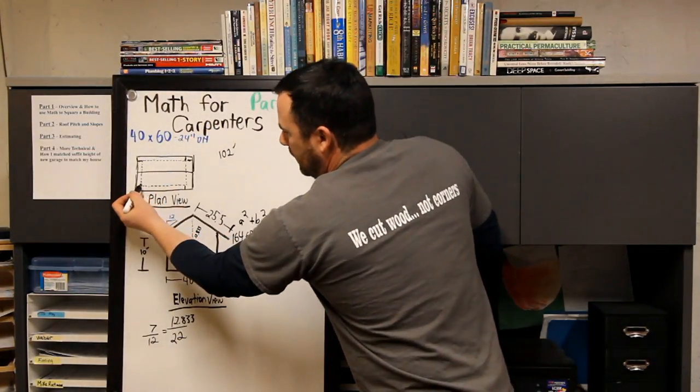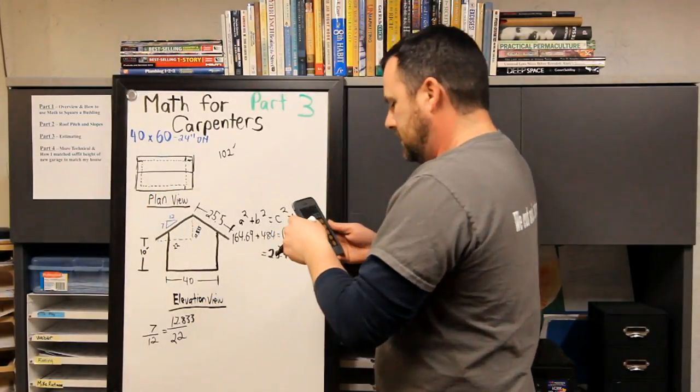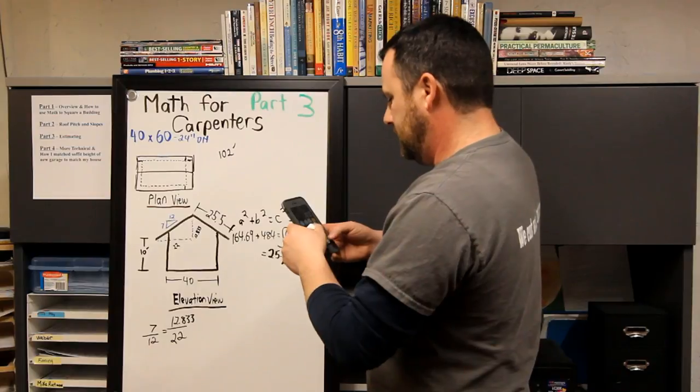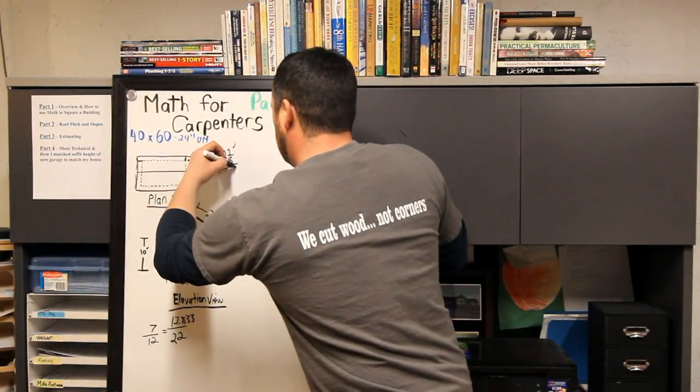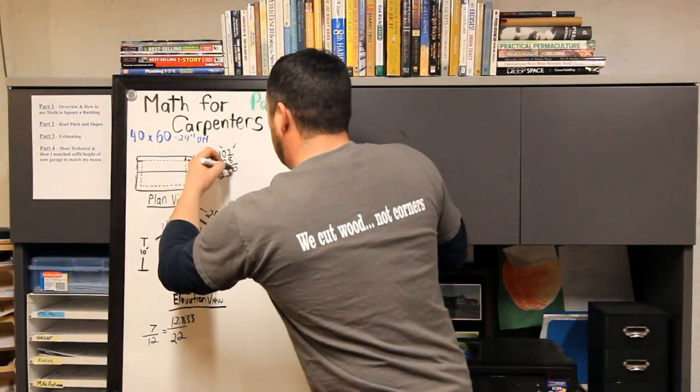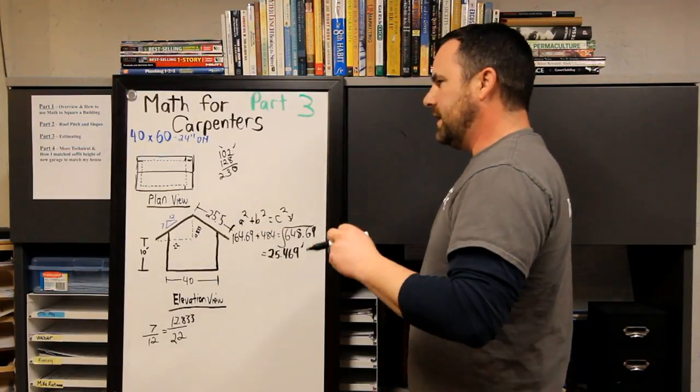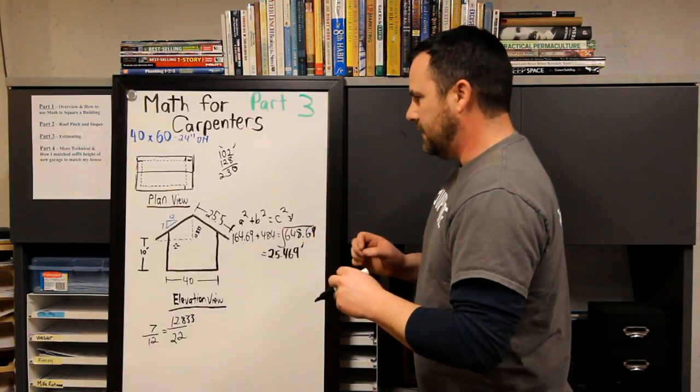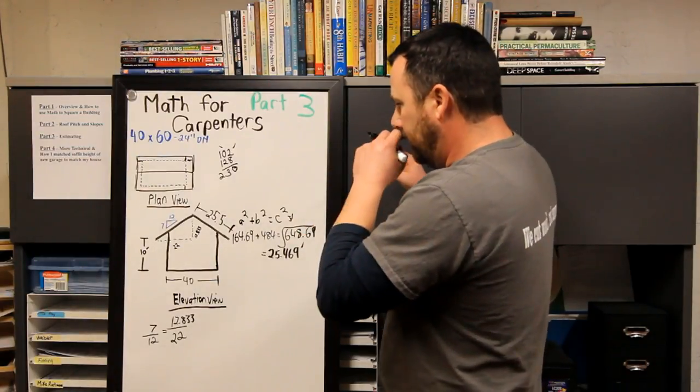And then what I would do is I just go 62, 4, 64 times 2 is 128, 230 lineal feet. And that'll just help you—we won't get into the specifics, you know, just adding little extra waste here and there—but that'll help you estimate that.